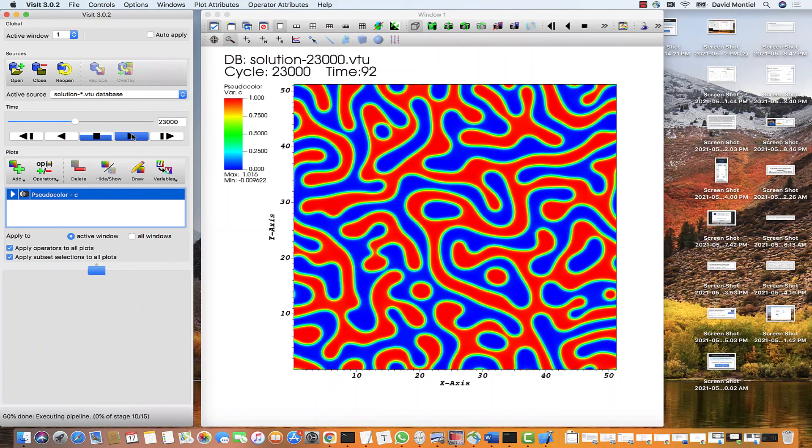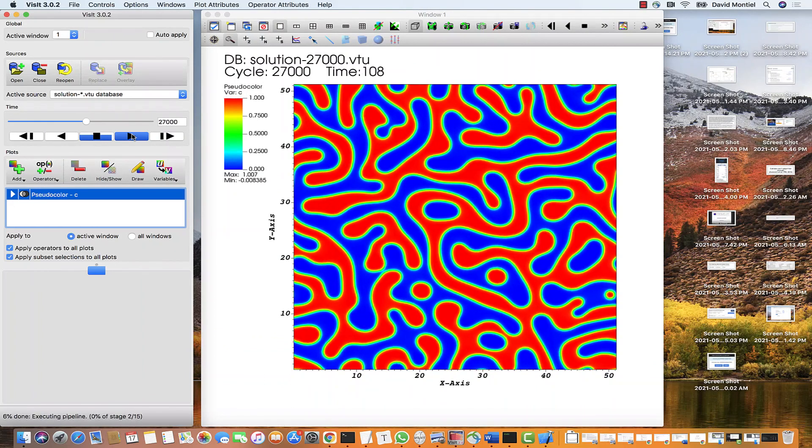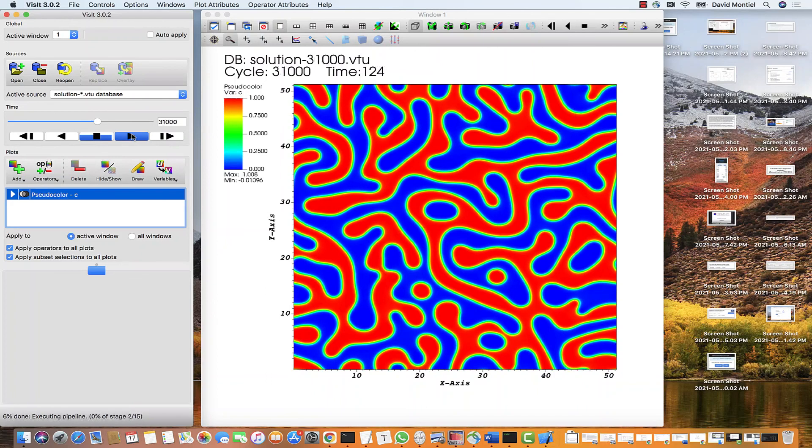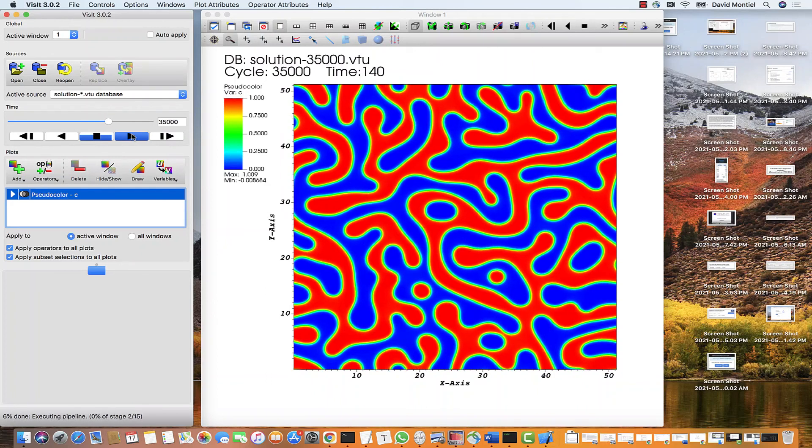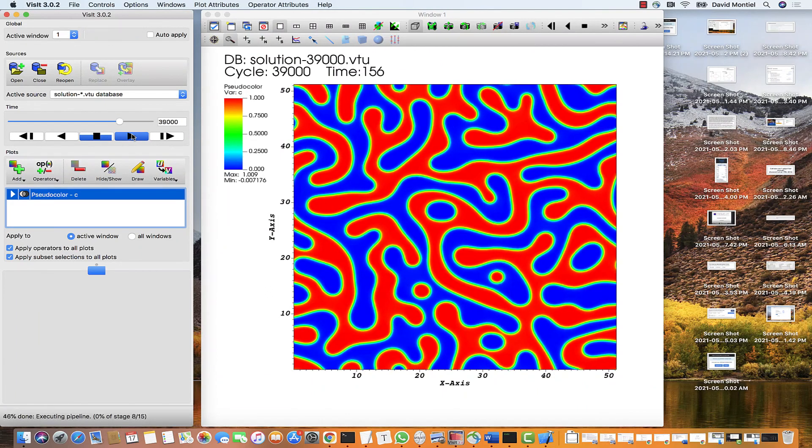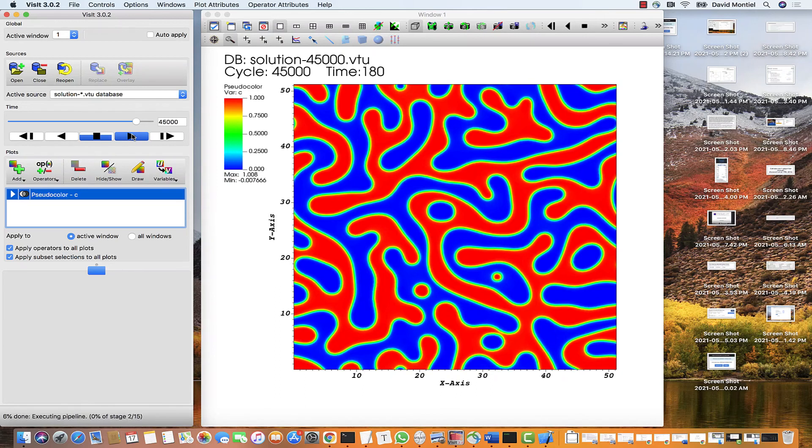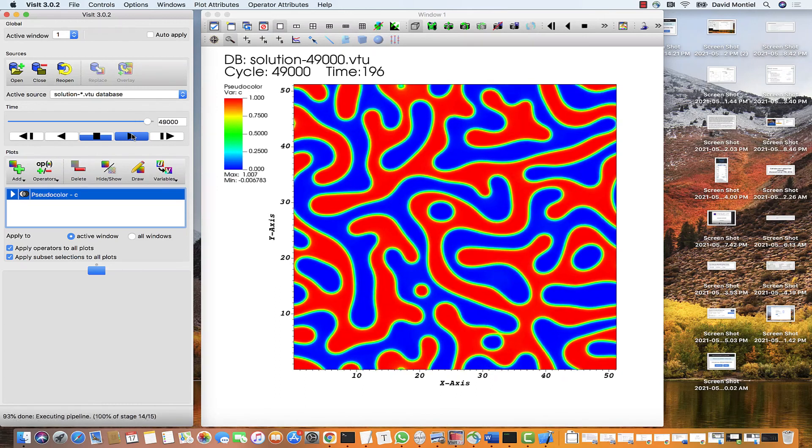Notice that at least by eye, it looks like the proportion of red to blue phases is constant throughout the simulation, which is what we would expect. If the value for each phase is fixed, and the dynamics are conserved.